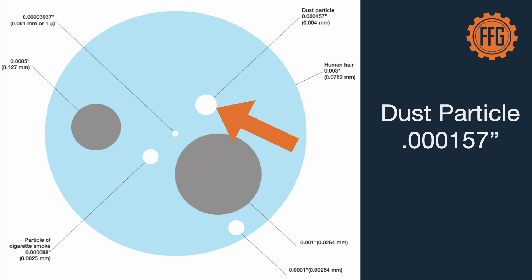The next thing I always tell people about is a dust particle. Dust that you see flying around in the air is about one and a half ten-thousandths of an inch in diameter — and that's getting really small.